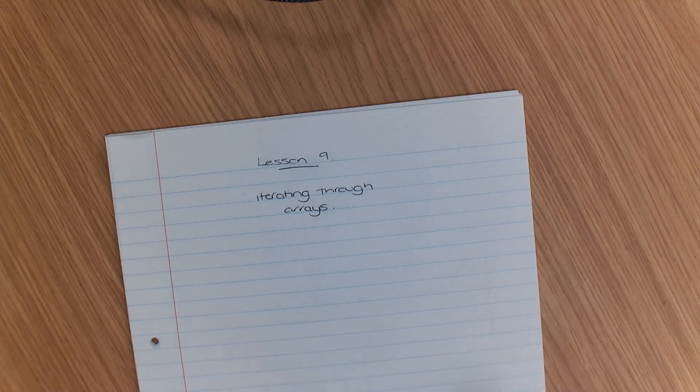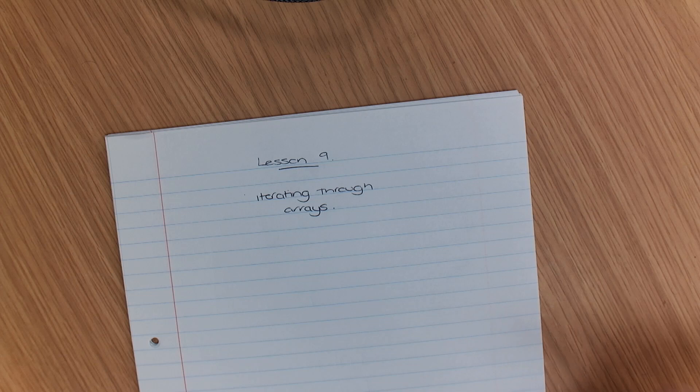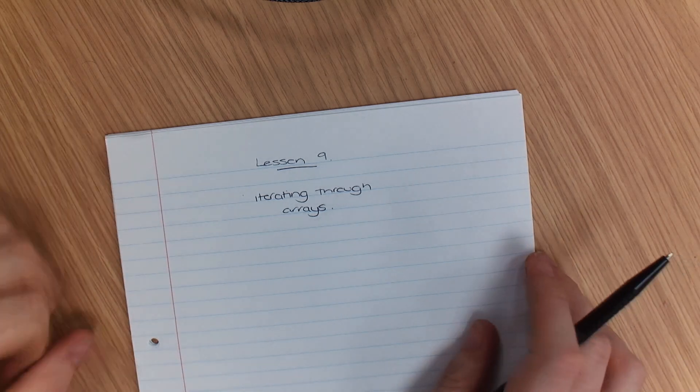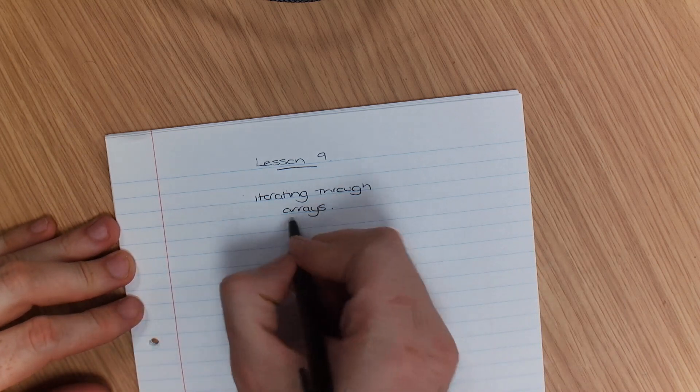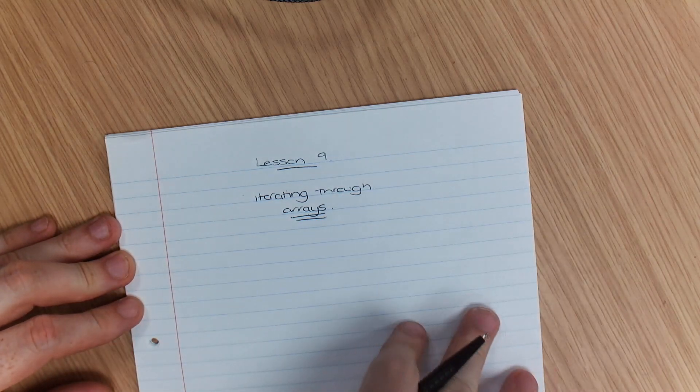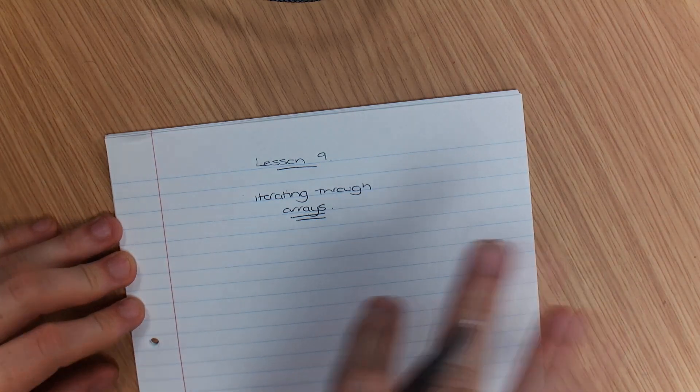In this lesson I'm going to show you how you can iterate through a list of numbers or even names. So what we're going to do is we're going to do a single array first. We've got a single set of names.